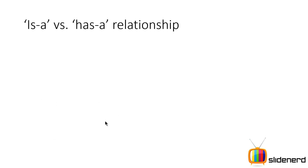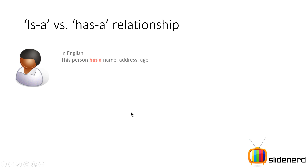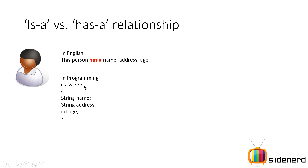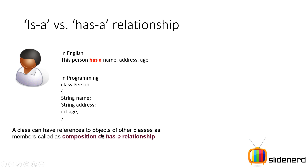First let's talk about 'is-a' versus 'has-a' relationships. In English you would say this person has a name, address, and age. If someone asked you to convert this to Java code, you can say there's a class called Person, which has properties: string name, string address, and age. If someone said this person has a car, you would also have a car class and create an object for it inside your Person class. This type of relationship is called a composition or 'has-a' relationship.